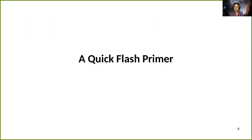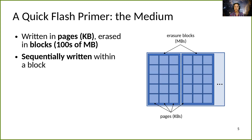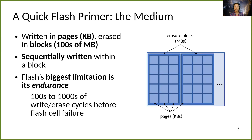To understand why, I'll first explain how flash works. Flash is written in pages, which are kilobytes in size, and erased in erasure blocks, which are hundreds of megabytes in size. Flash is sequentially written within a block, and flash has a unique limitation in that its endurance is limited. Each write and erase cycle degrades the flash, and eventually it can no longer retain data.